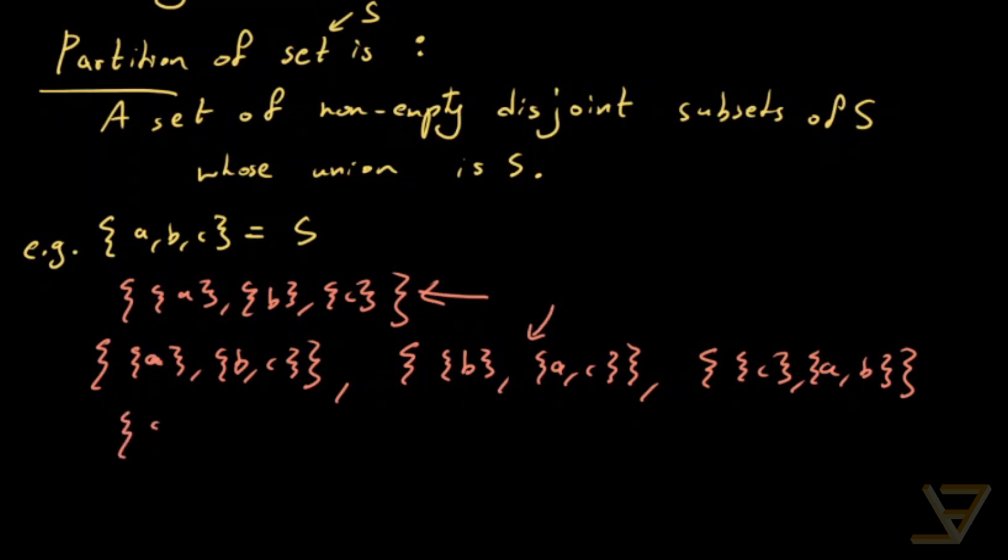We're going to have a bunch of singletons here and we've got singletons with two sets here. And the last example is the partition that consists of just the set - so ABC in a set and that's the only element. So those are all the partitions of S.